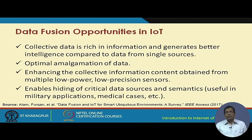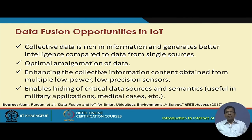The opportunities: collective data is rich in information and generates better intelligence and better insight compared to single source data from individual sensors. What is required is to optimally amalgamate — meaning integrate optimally — the data, because the more you integrate the more insight you can get, but this also has to be done in real time for the decision to be meaningful. Optimal amalgamation of data enhances the collective information content obtained from multiple low-power, low-precision sensors.